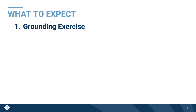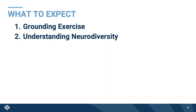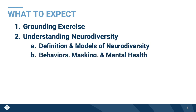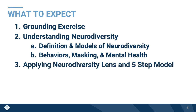Here is how we are going to achieve those objectives. We're going to start with a short grounding exercise to get ourselves centered and present. Then we will have two main parts to the training which will match up with the objectives. First, we're going to discuss neurodiversity by exploring its definition and models, and also how it implicates behavior, mental health, and masking. And second, we're going to apply those concepts through a five-step model designed to help you connect with your students and identify the support they need.